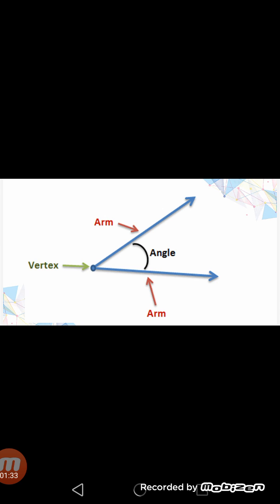In the definition of an angle, it is clearly defined that when we join two rays, this joining forms an angle, as you can see in the diagram on your screen. In the angle, these rays are called the arms or sides of the angle. The common point of both rays is called the vertex. The blue rays in the diagram show the arms of the angle, and their common point of intersection is called the vertex.